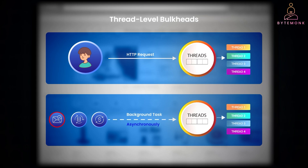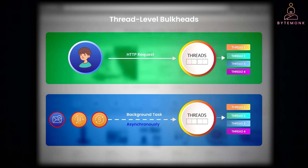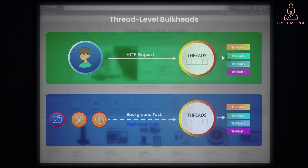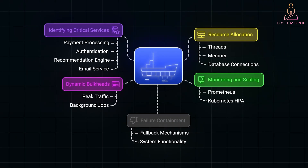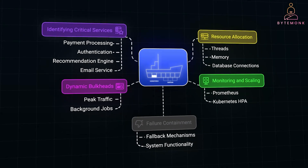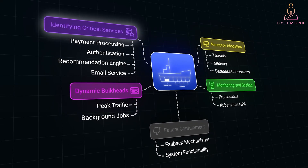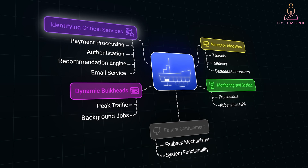For example, user-facing services might have their own threads, while background jobs like data syncing are allocated to a different pool. This prevents one type of task from overloading the system and slowing down others. When implementing a bulkhead pattern, there are some key factors to consider. Not all services in your system have the same level of importance, so start by identifying which services are critical and which can tolerate failures or slowdowns.